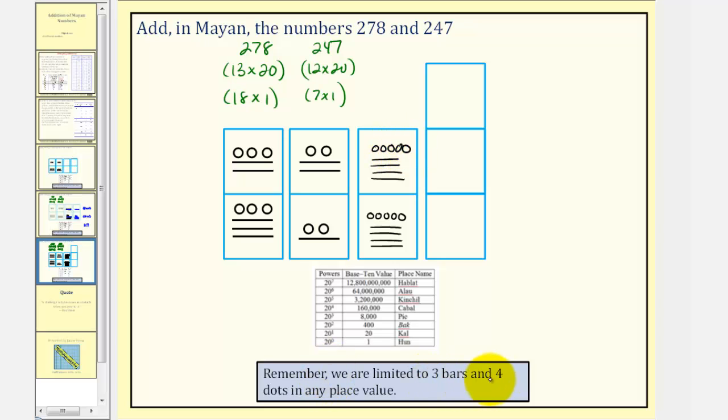But again, we're limited to three bars and four dots in any place value. Here we have four bars, which is 20. So we'll perform an exchange for one dot in the 20s place value here. And also we have five dots here, which we'll exchange for one bar. This leaves us with one bar in the ones place value.